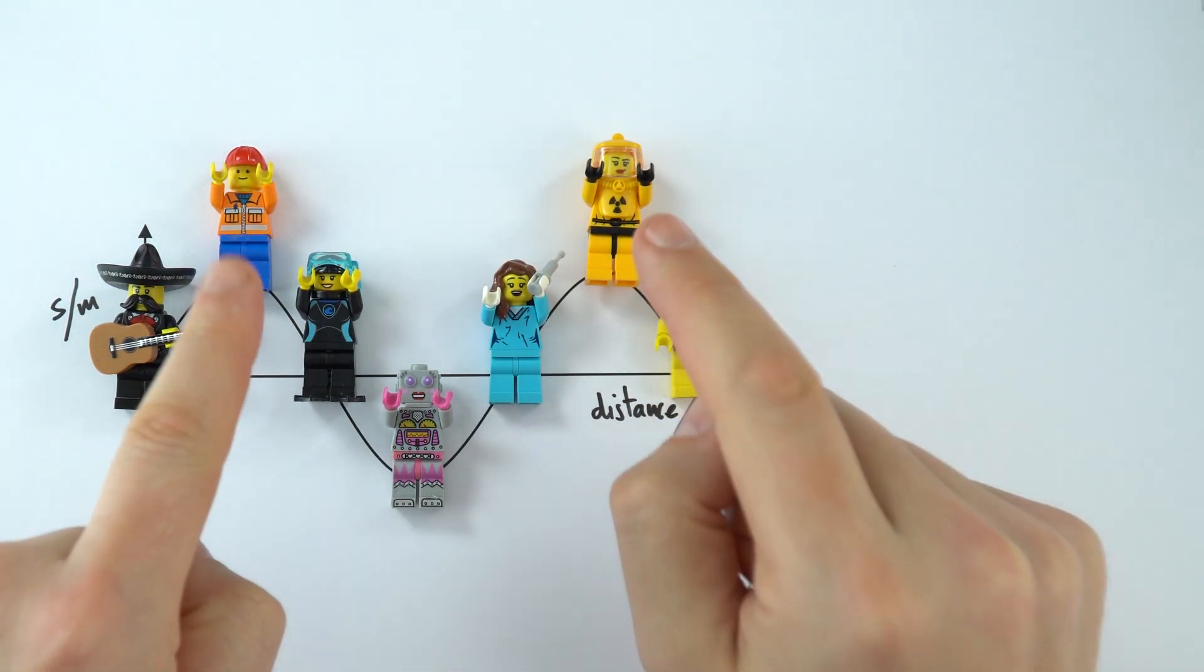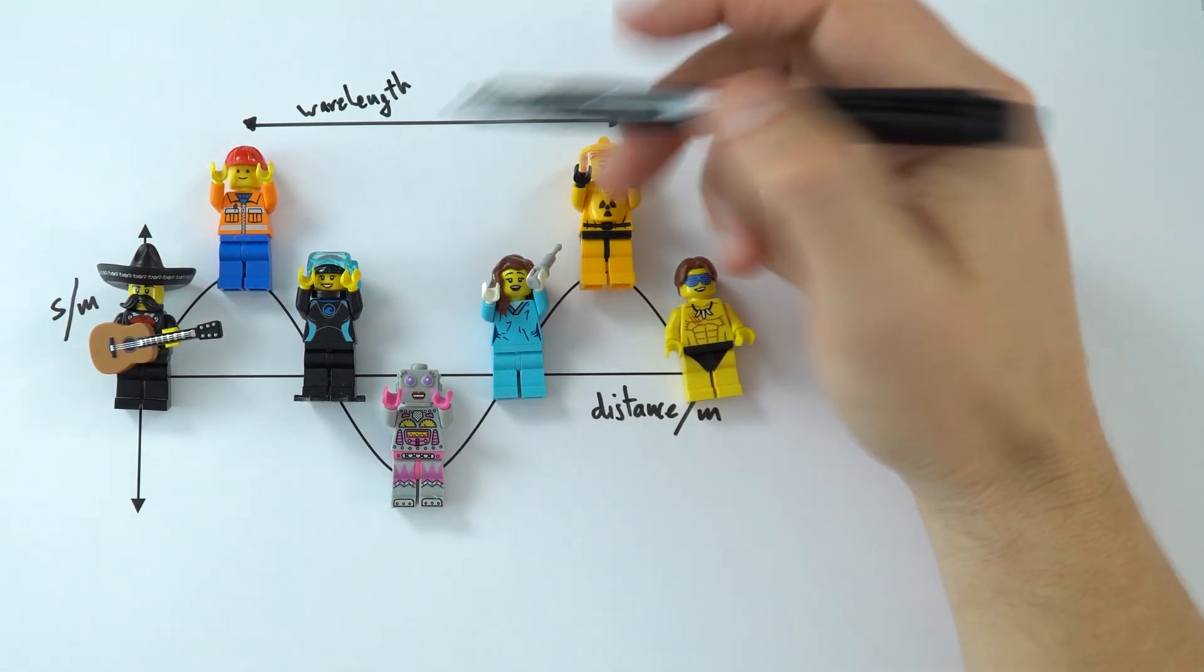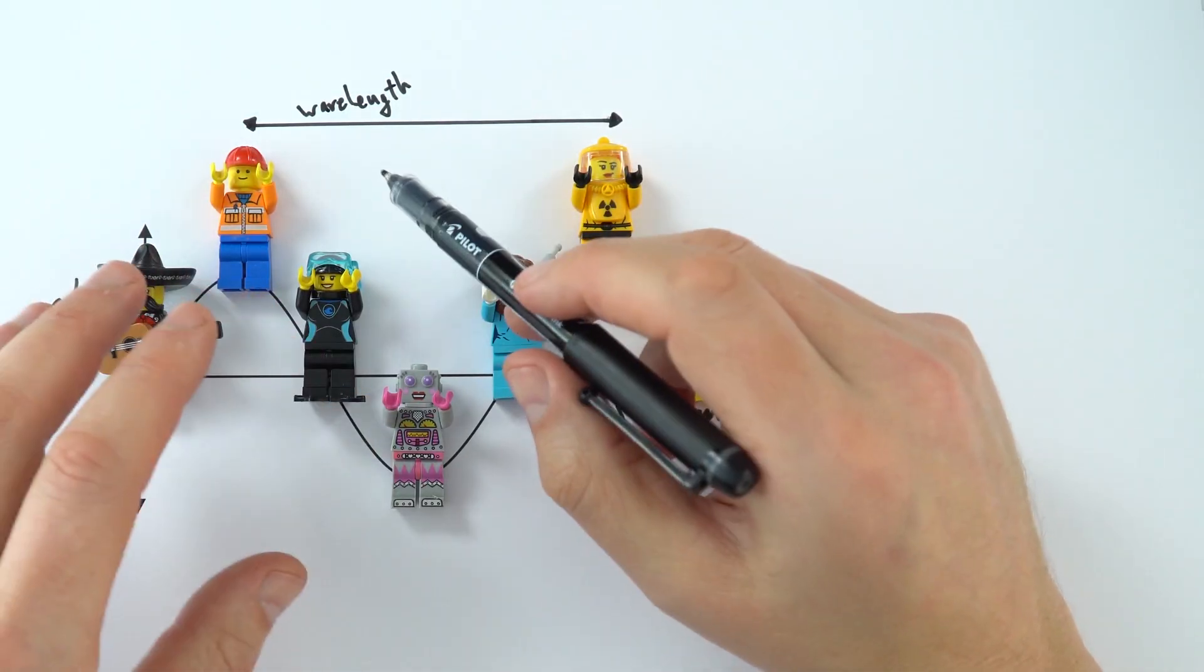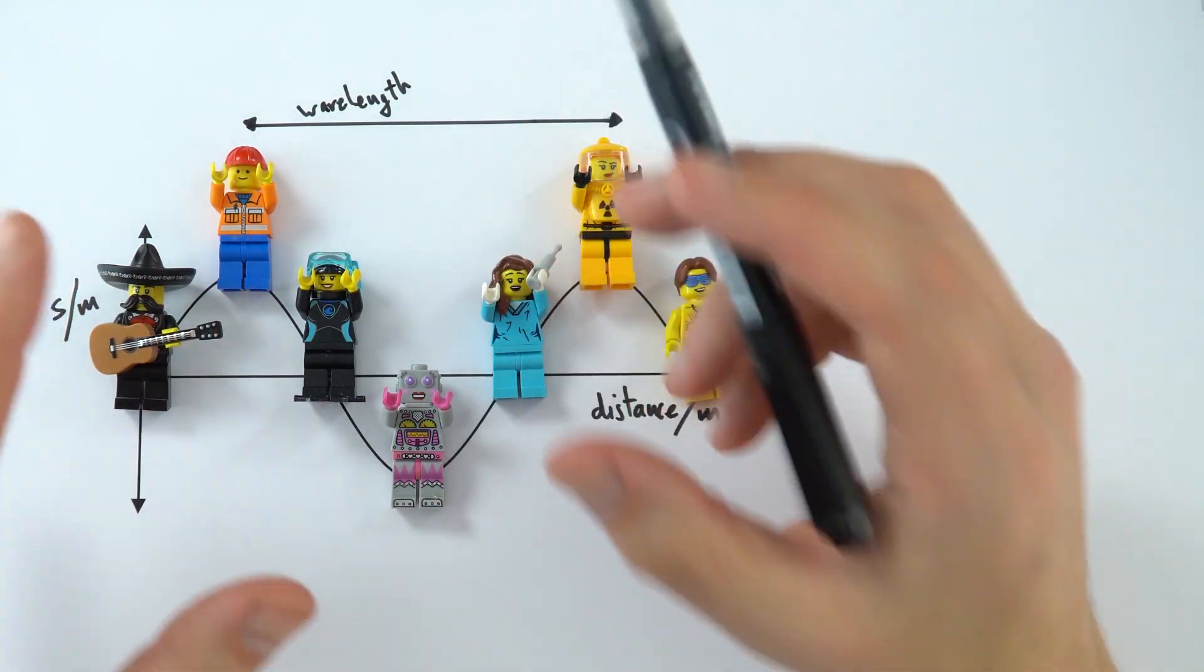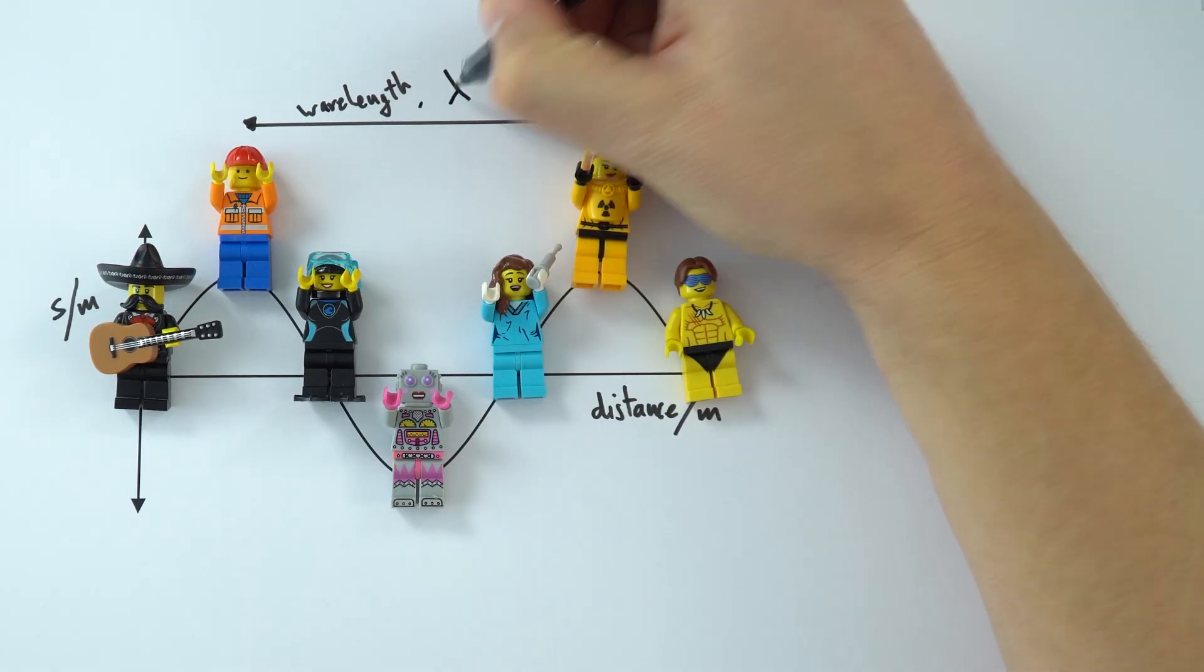And this is what we call the wavelength. Effectively that's the length of the wave. So this is the wavelength. Now the problem is that when we shorten this, we use a letter to represent this quantity, we run out of normal letters, so we have to go into the Greek alphabet, and we use the letter lambda.